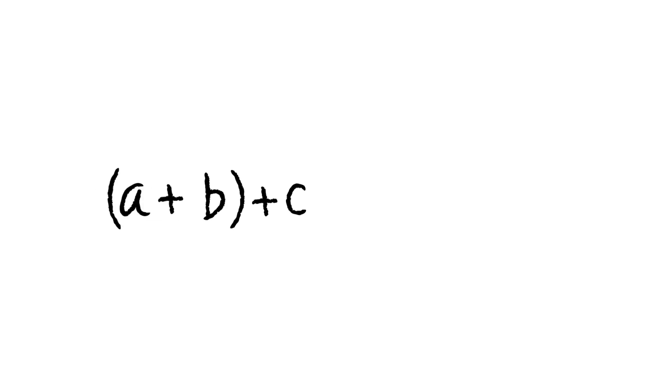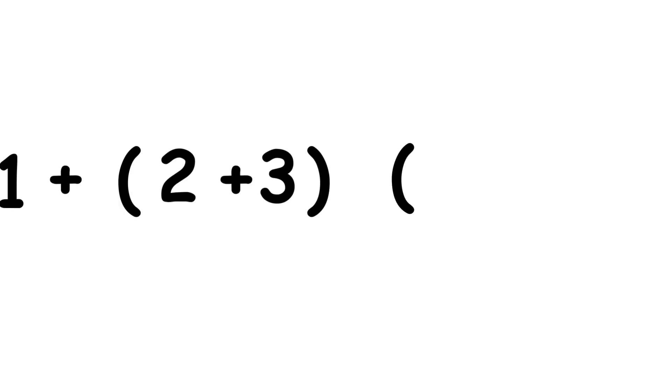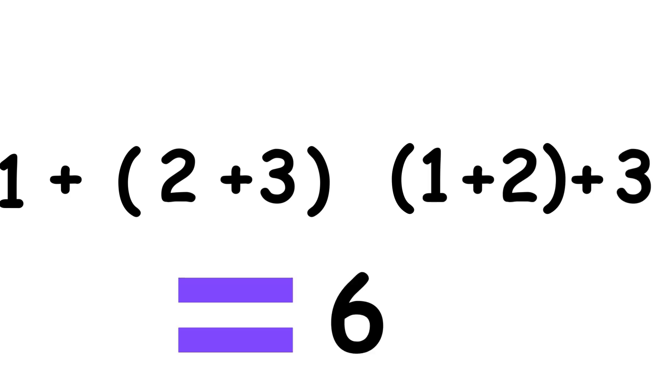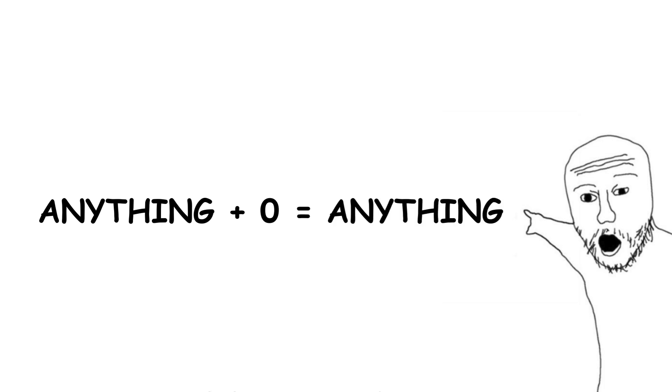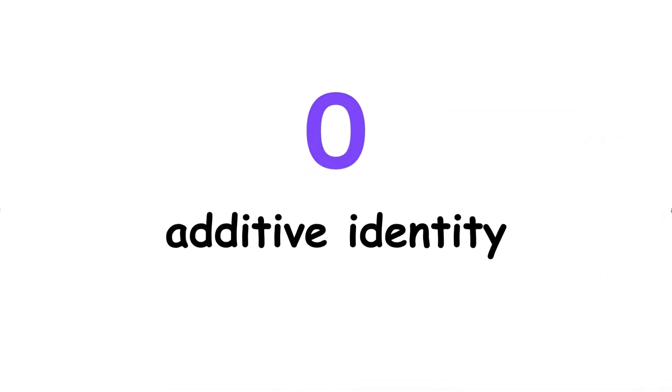It is associative, so if you have a sequence of multiple additions, changing the order in which you do them doesn't affect the sum. One plus quantity two plus three and quantity one plus two plus three are both equal to six. Anything plus zero is itself, so zero is called the additive identity.